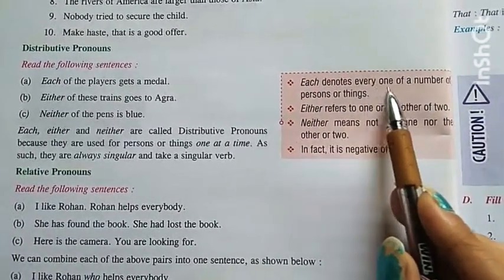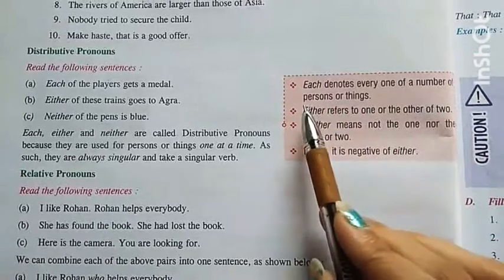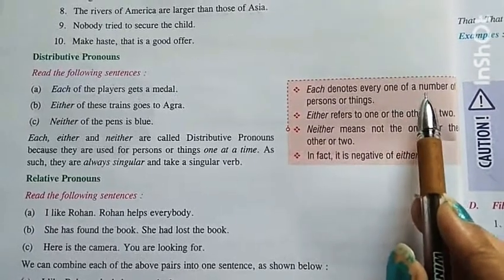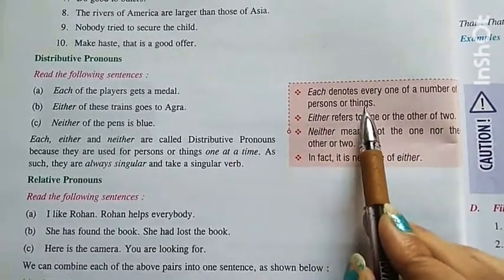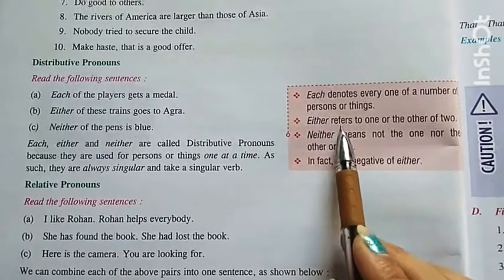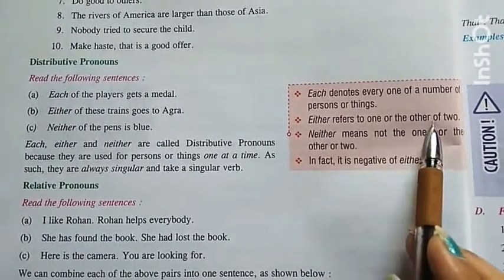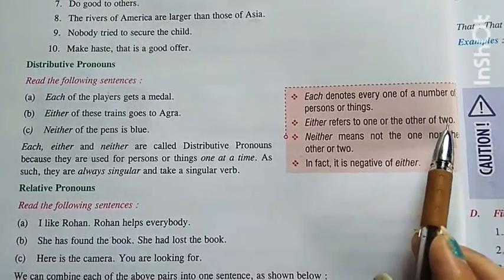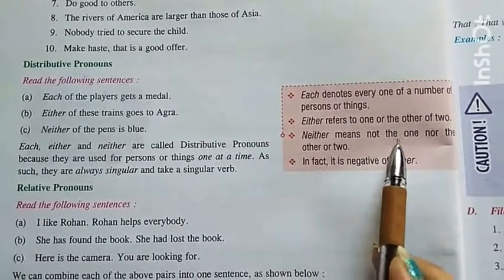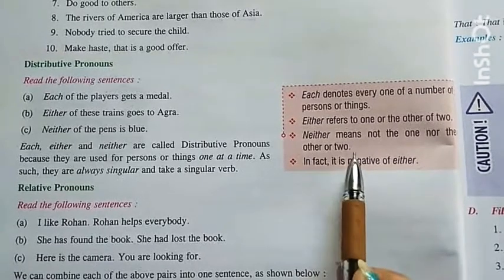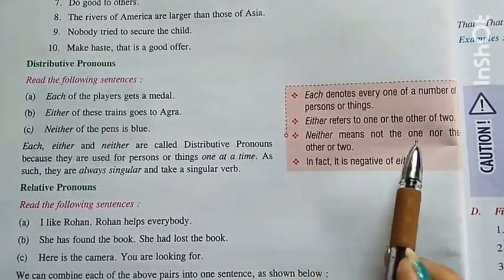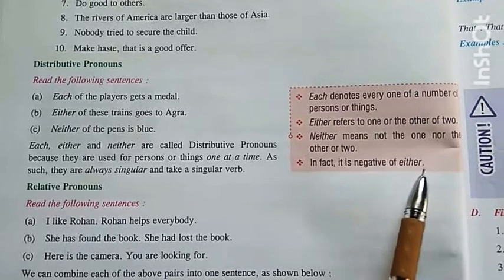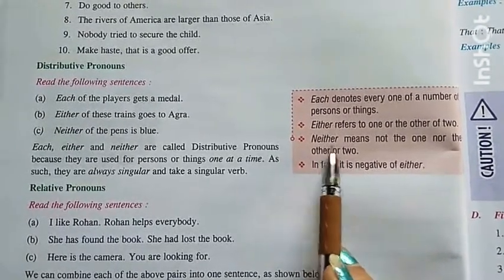Each denotes every one of a number of persons or things. Each denote करता है everyone — प्रति एक को number of persons or things से. Either refers to one or the other of two. Either refer करता है one को या उनमें से two को. Neither means not the one nor the other of two. Neither का मतलब होता है ना तो one ना ही दूसरा. In fact, it is the negative of either — ये जो neither है वो negative होता है either का.